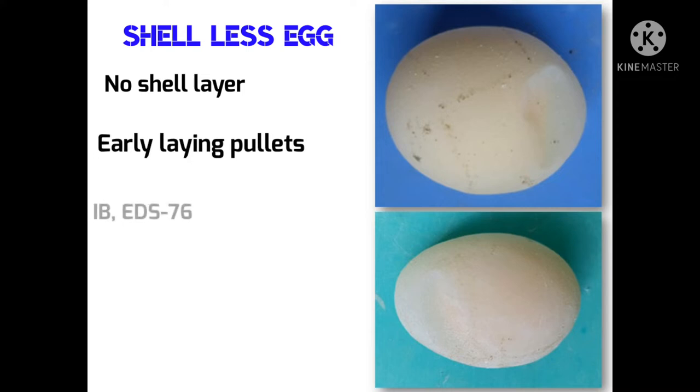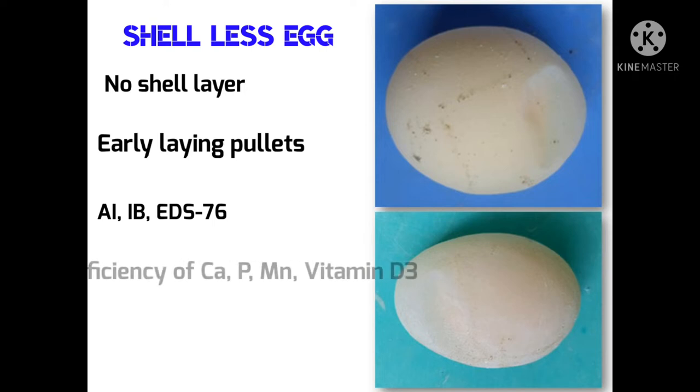Some diseases like avian influenza, infectious bronchitis, egg drop syndrome 76 (EDS76), and the deficiency of calcium, phosphorus, manganese, or vitamin D3 cause shell-less eggs.